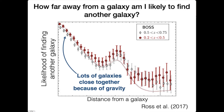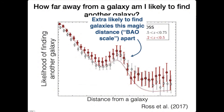What's very interesting is you find that very close to your galaxy, you have a very high probability of finding another galaxy. That's because galaxies like to clump together—they feel each other's gravity, they draw each other towards each other. And as you go farther and farther away, you're less likely to find another galaxy. But there is also some magic distance, which in cosmology we call the Baryon Acoustic Oscillation Scale, where you are just a tiny bit extra likely to find another galaxy.